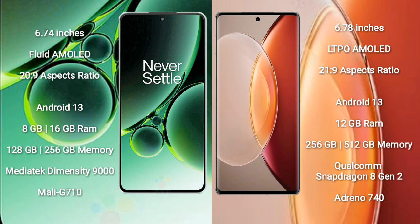Vivo X90 Pro Plus comes with 12GB RAM and 256GB or 512GB internal storage, powered by a Qualcomm Snapdragon 8 Gen 2 processor with an Adreno 740 GPU.